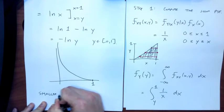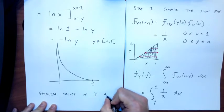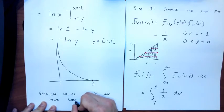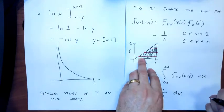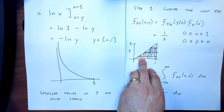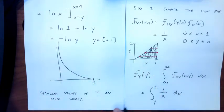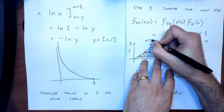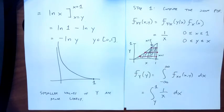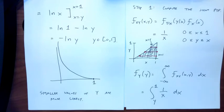The key point: when integrating to find the marginal in Y, you have to draw the picture and think carefully about the limits. Here, fixing Y, X ranges from Y up to 1 — that comes from the triangular region bounded by the line X=Y and the line X=1. As with all these integration problems, drawing the picture and identifying the correct limits is essential.